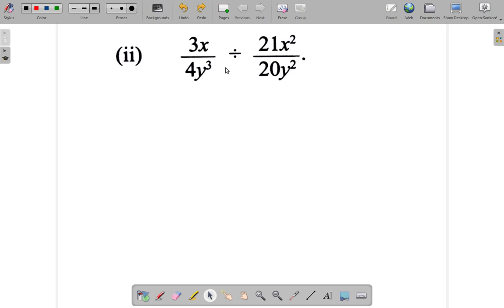Now, remember what to do when you're using the shortcut method here. You have 3x over 4y cubed. This becomes multiply. You multiply by, then you find the reciprocal of the second fraction. So it's really this over this. That's what you're getting.